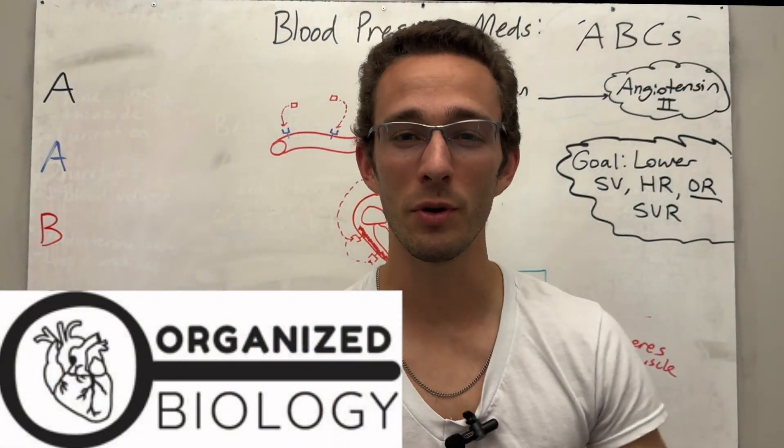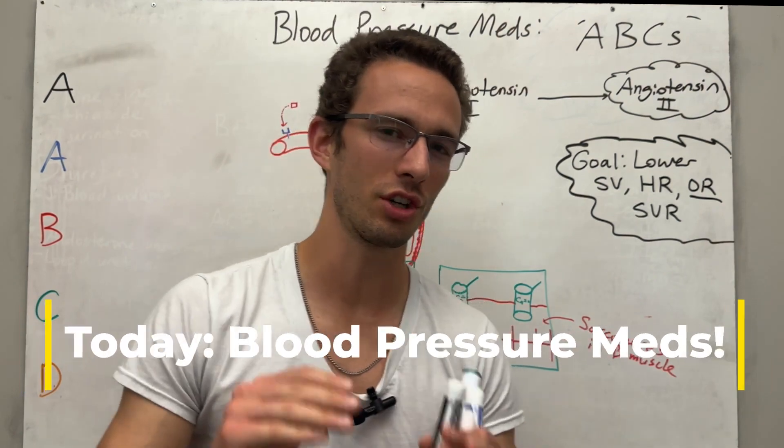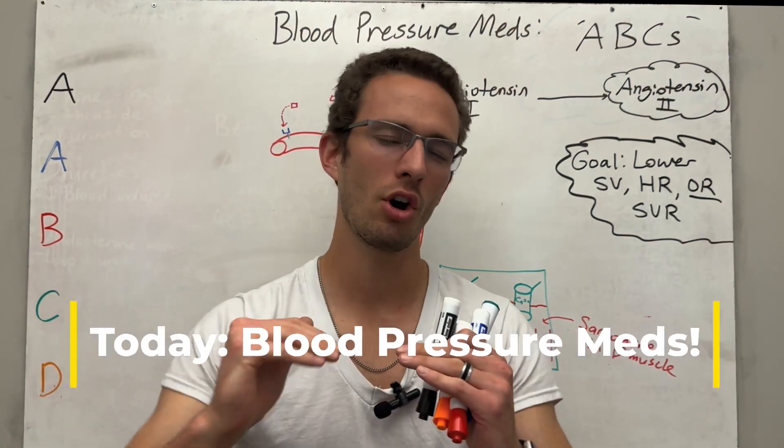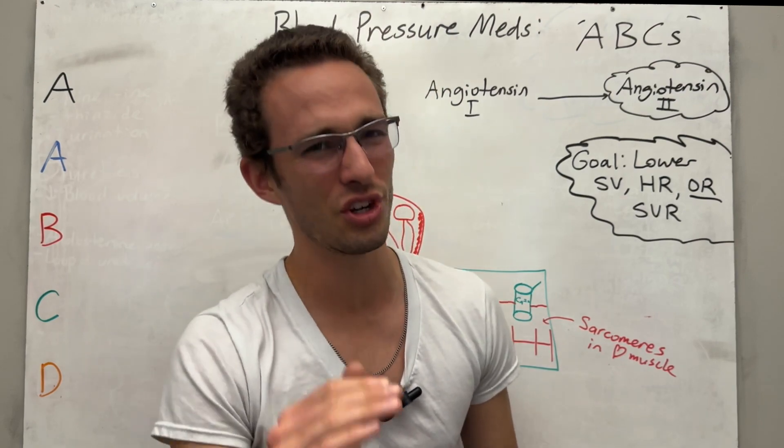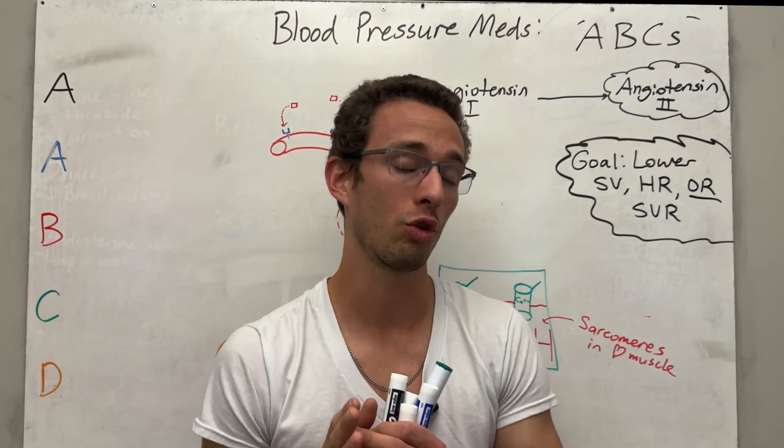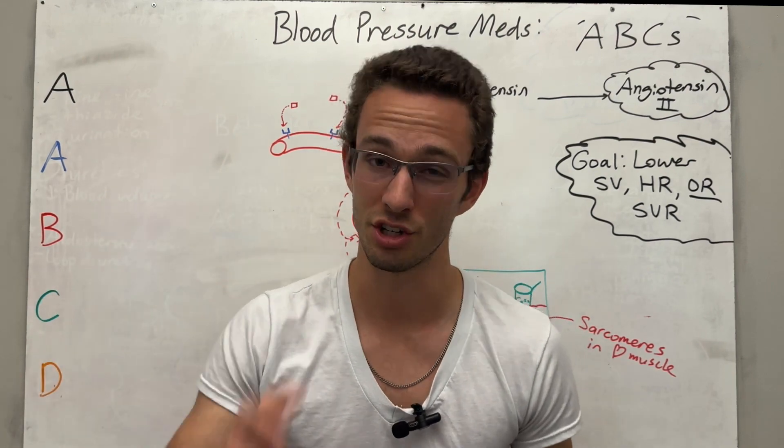Hey everybody, Organized Biology here, and today we're going through blood pressure medications. Remember, blood pressure medications, the goal is to lower mean arterial pressure because your body's really good at raising your blood pressure, not so good at lowering it. So for people with chronic hypertension or high blood pressure, a lot of times they need to go on one of these blood pressure medications.